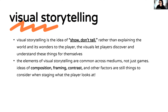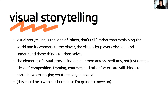The elements of visual storytelling are common across mediums — composition, framing, contrast, and other factors are still things to consider when staging what the player looks at. I think the biggest mistake people make for a game screen is neglecting visual storytelling and design theory concepts, because even if you're not trying to make a super artistic game, it's still essential for understanding where the player's attention goes and what draws it. But this could be a whole other talk, so we'll move on.